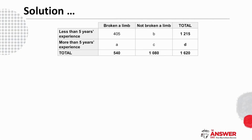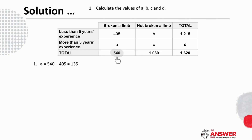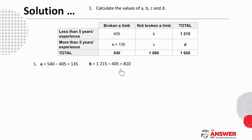To find A, there are too many unknowns in the horizontal, but there is enough information in the vertical. A is the total of everything in that column, so A is 540 minus 405, which is 135. Then we find B using the information in that row: 1215 minus 405, which gives us 810 for B. Because we now have B's value, we find C using the information in that column: 1080 minus 810, which is 270.